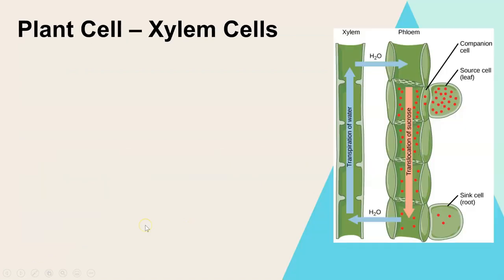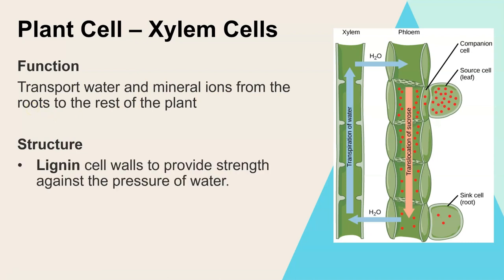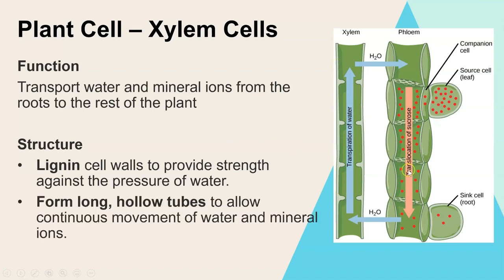Moving to plant cells - first we're looking at the group of plant cells that make up xylem tissue. The whole xylem is a tissue because it's made up of lots of cells working together. The function is to carry water around the plant along with dissolved mineral ions - it transports water and mineral ions from the roots where they're absorbed to the rest of the plant. It has lignin in the cell walls which makes it really strong so it doesn't break under the high pressure of water moving through it. It forms a hollow tube so that water can move through it easily - the inside of xylem cells is actually dead and that's why it's empty.